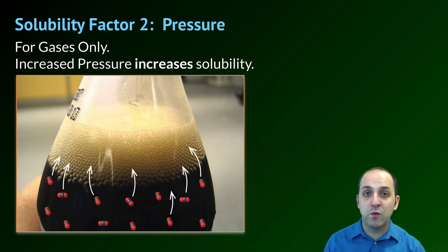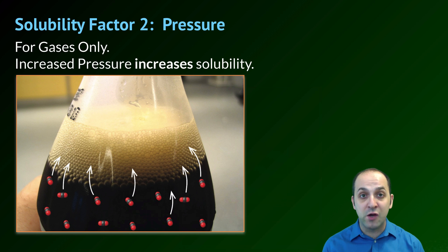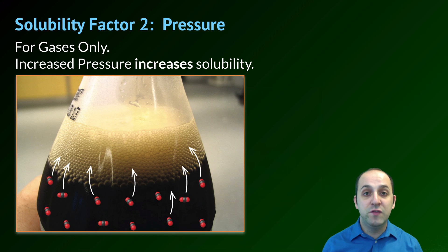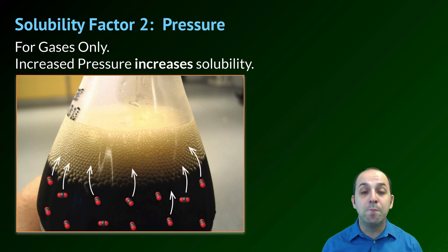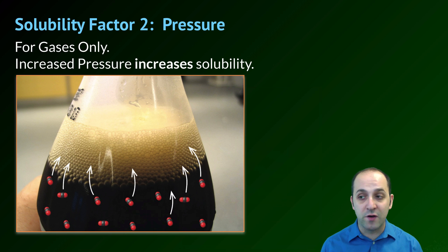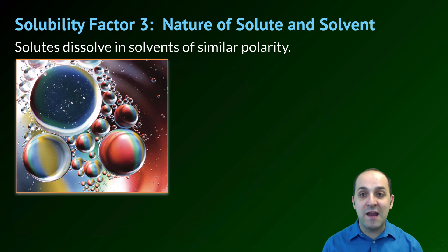Our next solubility factor is pressure, which really only affects gases. Increased pressure is going to increase the solubility of the gas, and decreased pressure is going to decrease that solubility. By increasing the pressure the solution is under, you're moving the atmospheric pressure further away from the vapor pressure of the solution, which decreases the amount of gas particles that can enter into the gaseous phase and leave the solution. The classic example is any carbonated beverage — by opening the bottle, you've decreased the pressure that the solution is under, which causes more of the carbon dioxide to leave the solution and enter into the gaseous phase.